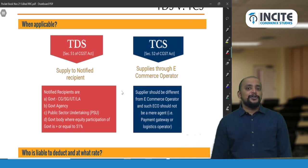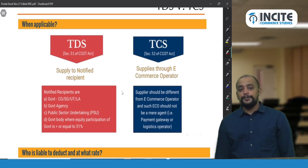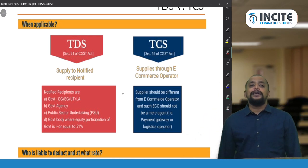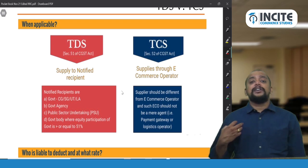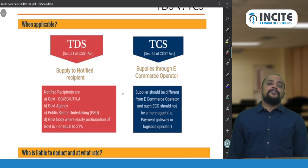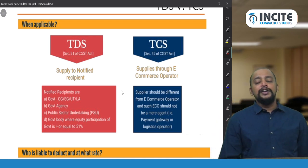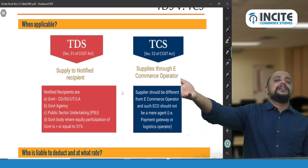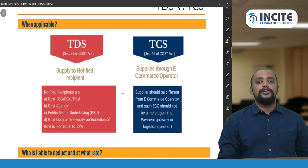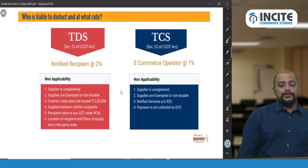An important point for TCS: the supplier should be different from the e-commerce operator — if you make supplies through your own e-commerce platform, TCS is not applicable. Also, the e-commerce operator should not be a mere payment gateway; they must have an obligation to deliver goods. Payment gateways like Paytm, Instamojo, and Razorpay are not e-commerce operators, so TCS does not apply on settlements made by them.